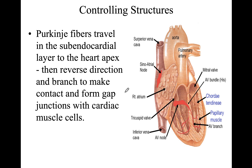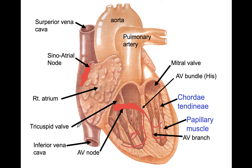The modified Purkinje fibers travel ventrally then reverse in direction. Between these cells there are gap junctions, and there are gap junctions with the muscle cells as well. These cells are responsible for transmission of impulses, resulting in contraction of the cardiac muscles. The sequence is: SA node → AV node → bundle of His (consisting of Purkinje cells). If there is a defect in the SA node, the AV node takes control and drives depolarization and contraction.